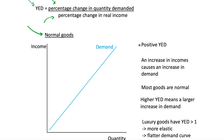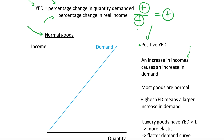Normal goods have a positive YED. What does this mean? It means that an increase in incomes will cause an increase in demand or quantity demanded. If we look at our equation, we have an increase in quantity demanded on the top and an increase in real income on the bottom — divide two positives and we get a positive outcome, giving us a positive income elasticity of demand. This is intuitive: an increase in incomes should cause an increase in demand because we have more money to spend on things.